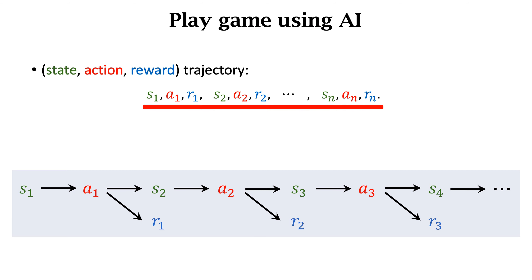The trajectory is: s1, a1, r1, s2, a2, r2, ..., sn, an, rn. N is the length of the episode. Different episodes can have different lengths. One episode is from the beginning to the end.